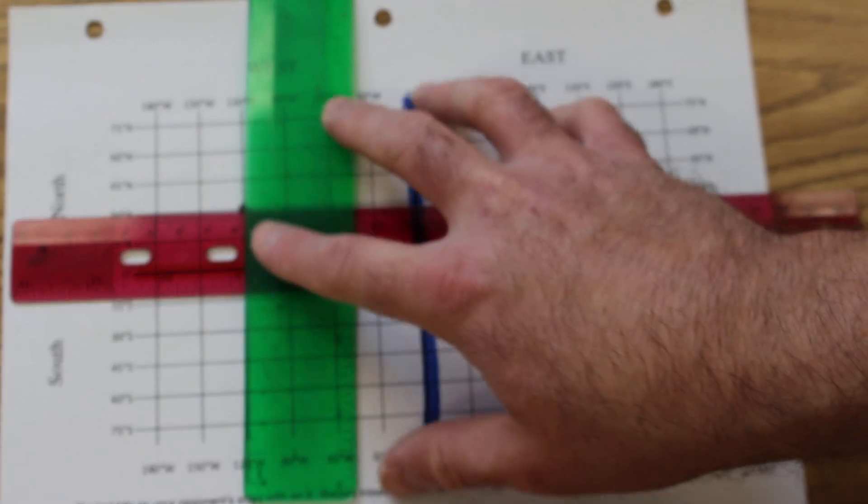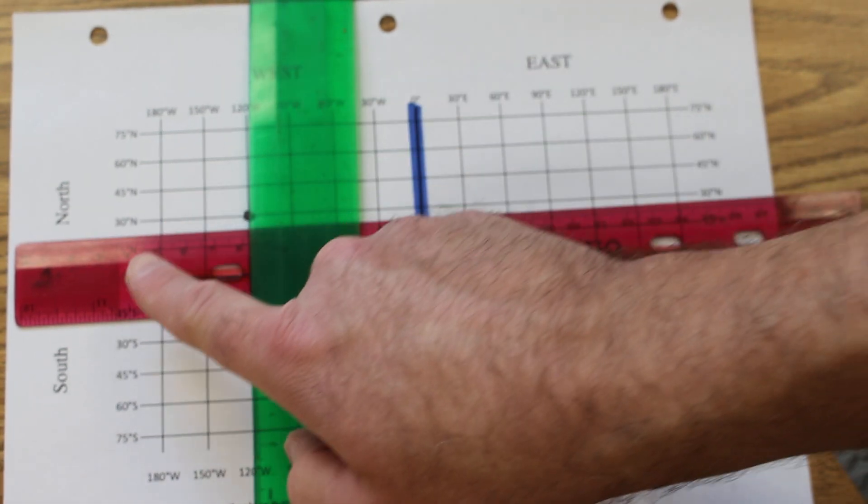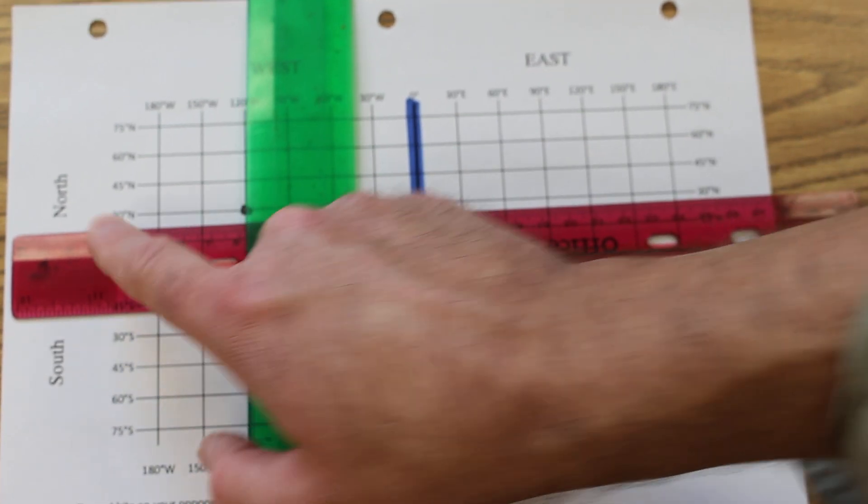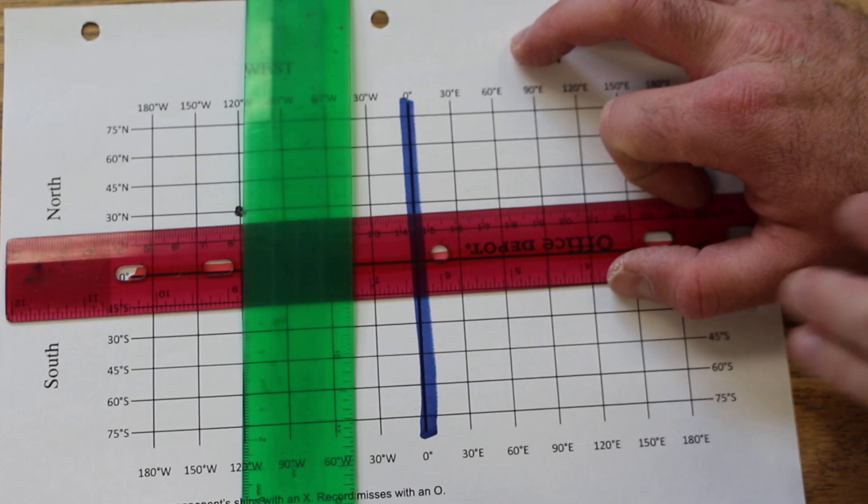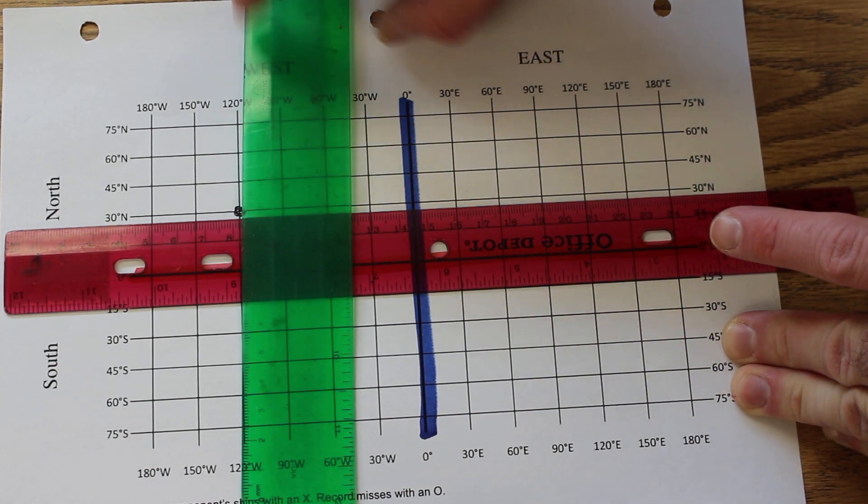30 degrees north, 30 degrees north right there, and 120 degrees west.